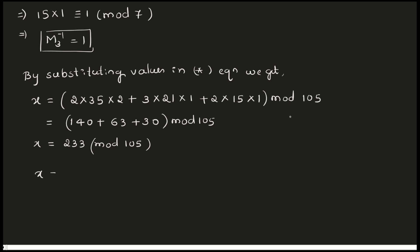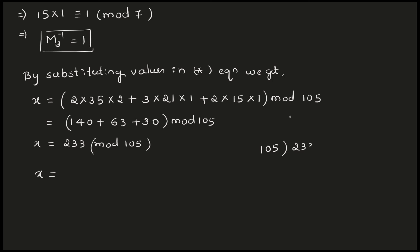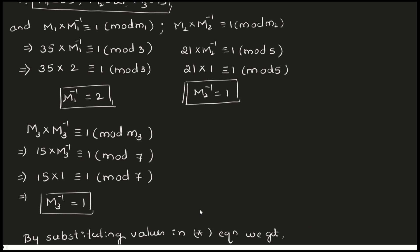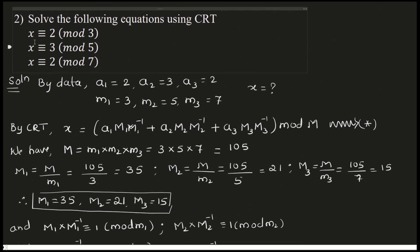Now 105 divides into 233: 105 into 2 is 210, and the remainder is 23. Therefore x is equal to 23. This is the required solution of the given three congruent equations. To cross-verify, substitute x equals 23 into the original equations: 23 mod 3 gives 21 with remainder 2, so 23 is congruent to 2 mod 3. The answer is correct.